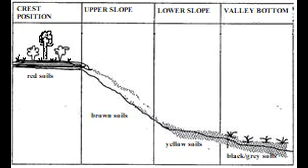Let's take a look at the crest position. Soils at the crest position are often shallow and with rock outcrop. If you go at or near the top of a hill, you would notice that the soil there is shallow, skeletal, or not fully formed, and the profiles are not deep. If you dig down, you can easily reach the bedrock.